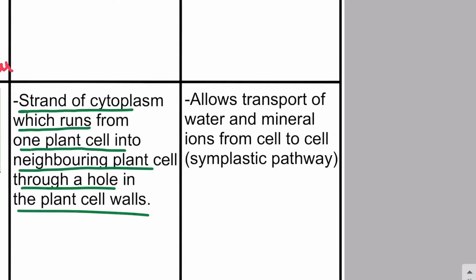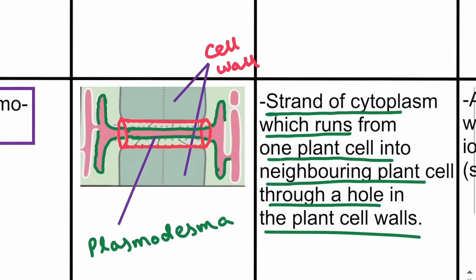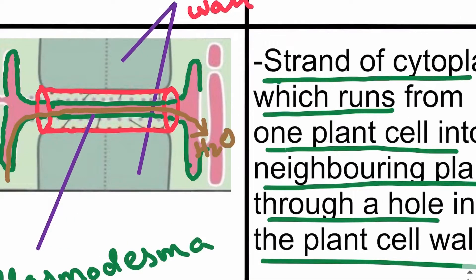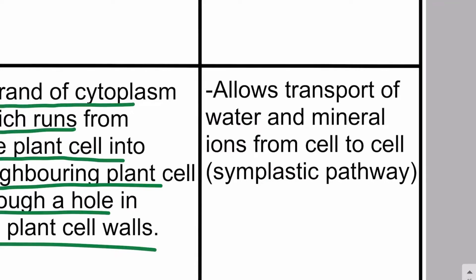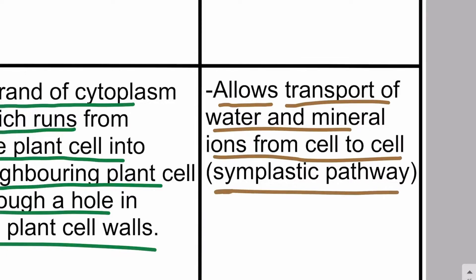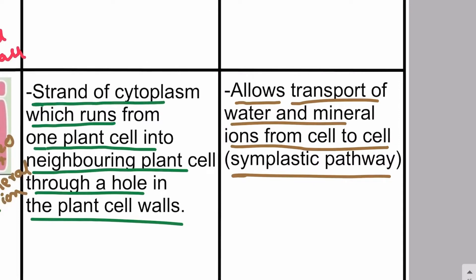Now, what is the function of plasmodesmata? Through these cytoplasmic connections, water and mineral ions can travel from one cell to another. When water and mineral ions travel through plasmodesmata from one cell to another, this pathway is known as the symplastic pathway. So the function of plasmodesmata is to allow the transport of water and mineral ions from one cell to another via the symplastic pathway or symplastic route.